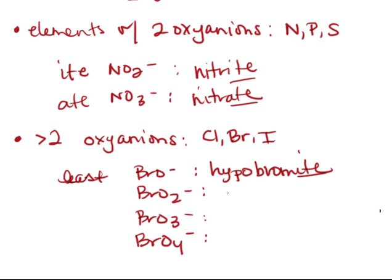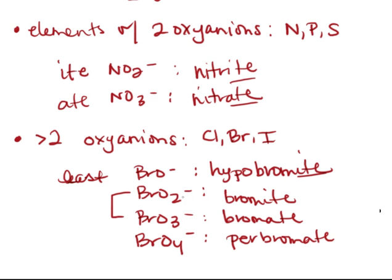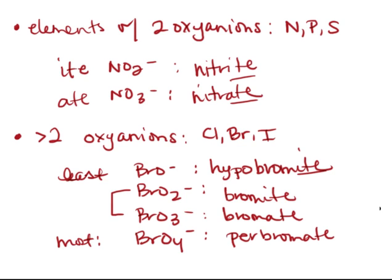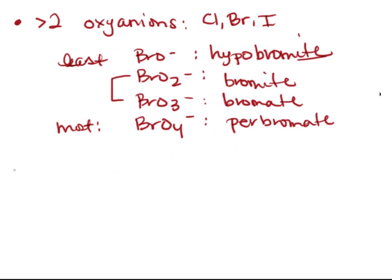The next one would just be bromite. Then you would have bromate and perbromate. This follows the normal trend of -ite and -ate. Hypo means under, so that goes for the least number of oxygens. And per out in front corresponds to the most number of oxygens. There are also hydrogen containing